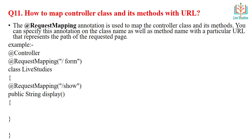Next question: How do you map a controller class and its methods with a URL? The @RequestMapping annotation is used to map the controller class and its methods. You can apply this annotation on the class name as well as the method name with a particular URL that represents the path of the request page. For example, you can create a class with @RequestMapping like '/show' and use it with tools like Postman to test APIs. You can use @Controller along with @RequestMapping, specifying GET or POST methods as needed.